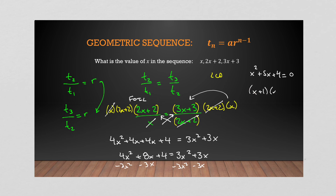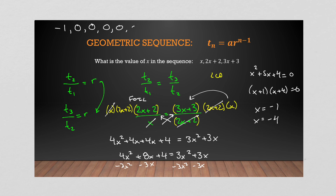Simplifying: 4x² + 8x + 4 = 3x² + 3x. Moving everything to one side gives x² + 5x + 4 = 0. Factoring: (x + 1)(x + 4) = 0, so x = −1 or x = −4. We have two potential values. Testing x = −1: the first term is −1, the second is 2(−1) + 2 = 0, and the third is −3 + 3 = 0. That gives the sequence −1, 0, 0... which is not a valid geometric sequence, so we reject x = −1.